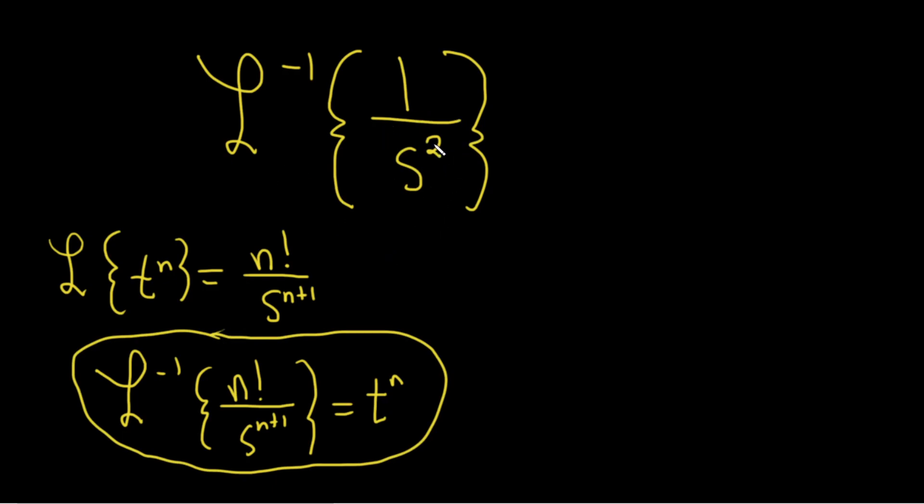So note that this piece here is n plus 1. So the piece up here has to be your n. So you can think of this as 1 factorial. So it's 1 factorial over s to the 1 plus 1. So in this case here, n is equal to 1.